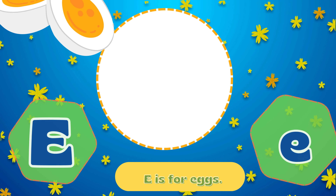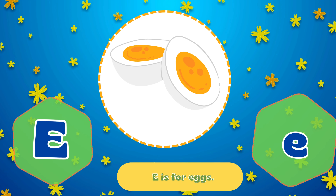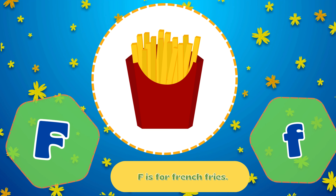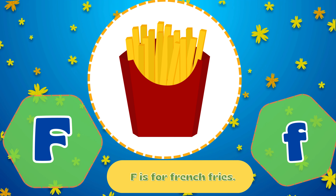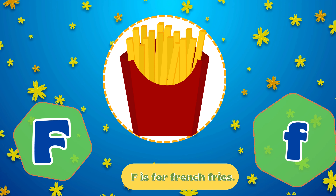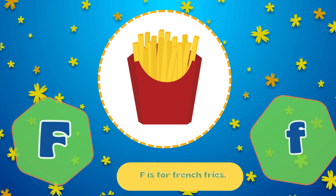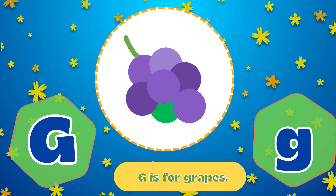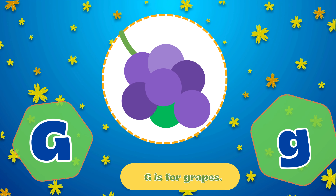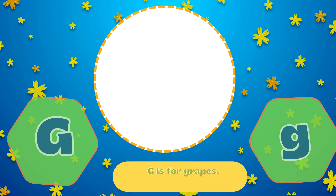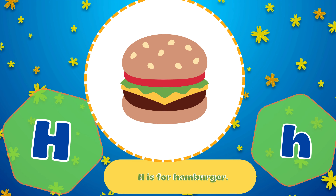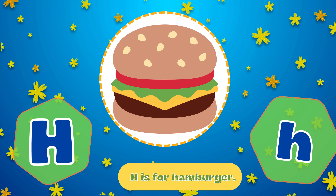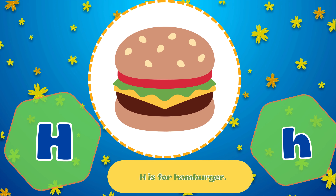E is for Eggs. F is for French Fries. G is for Grapes. H is for Hamburger.